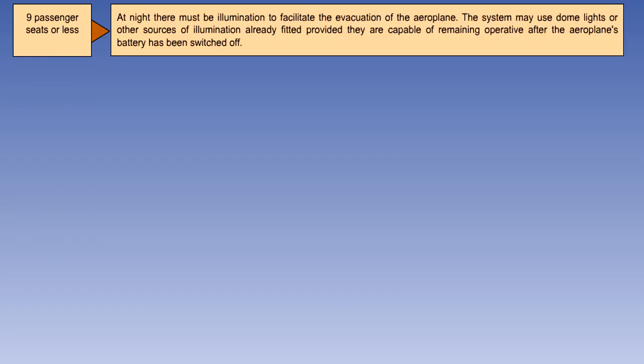With an approved passenger seating configuration of 9 or less seats, the aeroplane must not be operated at night unless it is provided with a source of general cabin illumination to facilitate evacuation of the aeroplane. This may use normal internal lighting systems, provided they are capable of remaining operative after the aeroplane's battery has been switched off.